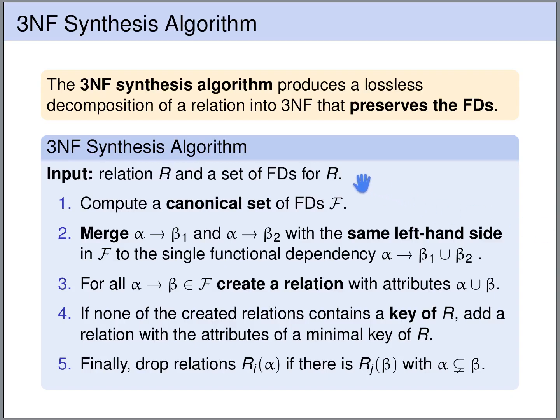The input of the synthesis algorithm is a relation R and a set of functional dependencies for R. The first step is the same as for the Boyce-Codd normal form: we compute a canonical set of functional dependencies. The second step is different because now we are not maximizing the right-hand sides, but we are simply merging functional dependencies that have the same left-hand side. We will merge the functional dependencies with the same left-hand side, but we are not going to maximize the right-hand sides in the sense that we take all the attributes in the cover.